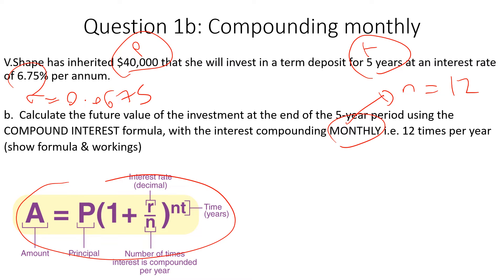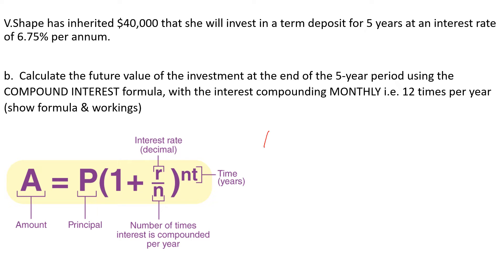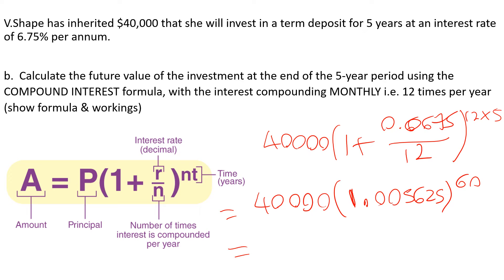So our equation, 40,000. One plus 0.0675 divided by 12 times per year. N is 12 times 5. That's a bit messy. So let's tidy this up a bit with an extra step this time. So 0.0675 divided by 12 equals 0.005625. But don't take my word for it. Check that out on your calculator. Time to the power of 12 times 5 is 60. So then we punch that in our calculator and we get 56,000 and $5 if we round to the nearest dollar.